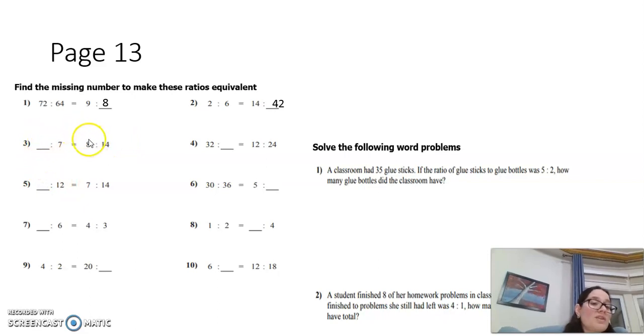32 to what equals 12 to 24? Actually, there is no relation between 32 and 12, so we are going to simplify this one. 12 to 24 will become 1 to 2. So how can I make 32 into 1? Divided by 32. How can we make the 2 from the multiples of 32? By timing it by 32, so 2 times 32 is going to be 64.